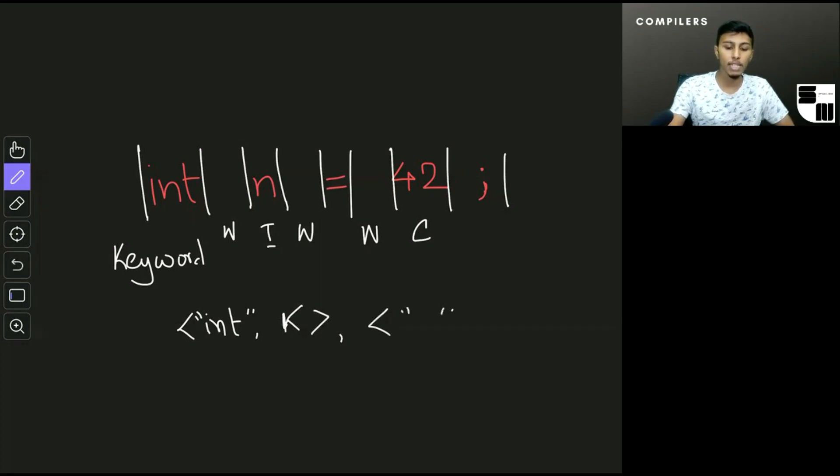Next I would have N right here and I for identifier, and then I would have an equals here which may not have a category of its own. Let me just write it like that, and so on.